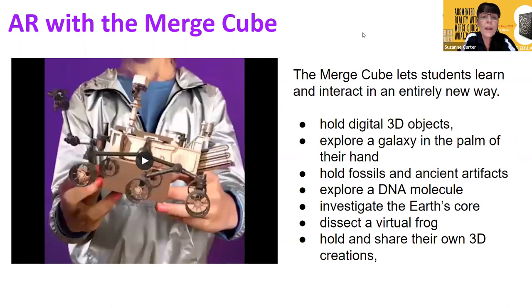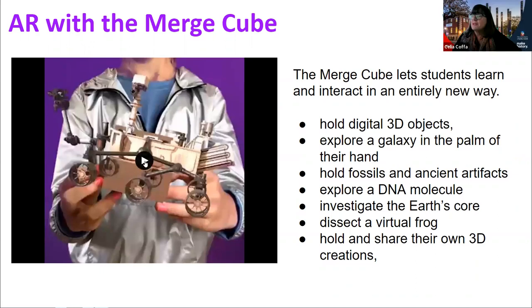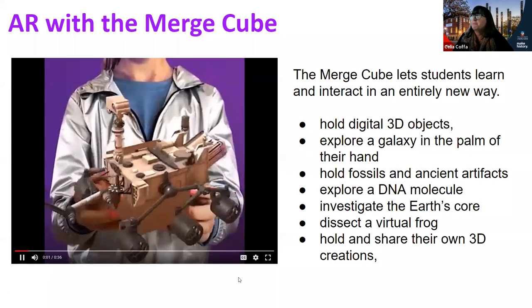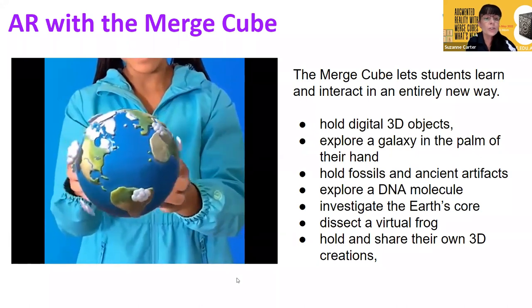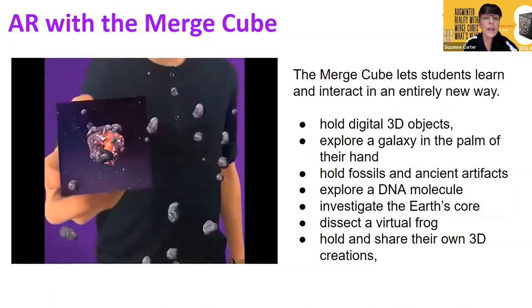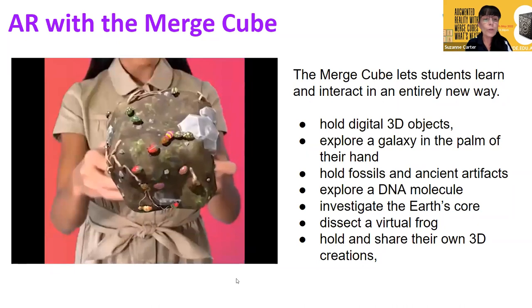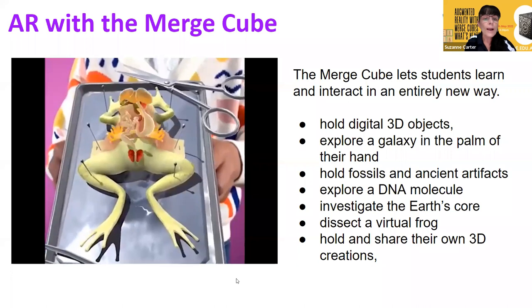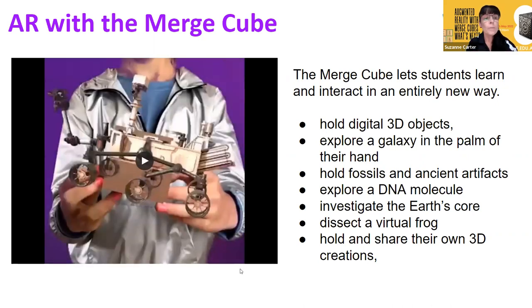What you can see is students actually holding a Merge Cube, but looking through the lens of a device you can see a number of superimposed images on it — so they're basically holding the 3D object in their hands. You can have a galaxy there, environmental features, fossils in your hand, explore the different parts of the earth, dissect a frog, look at DNA molecules. There are a range of already-developed augmented reality objects available in Merge Cube EDU.